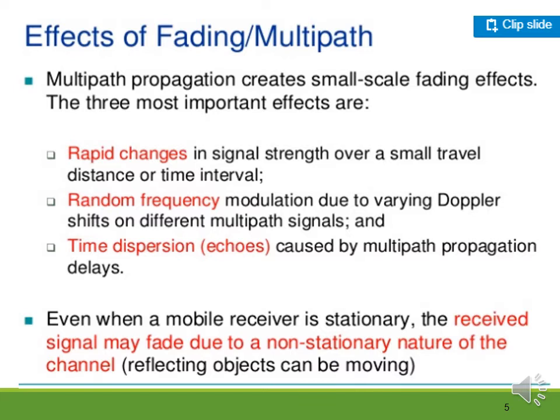Multipath propagation creates small-scale fading effects. The three most important effects are: first, rapid changes in signal strength; second, random frequency modulation due to Doppler shift — the change in frequency or wavelength of a wave relative to an observer moving relative to the wave source; and third, time dispersion caused by multipath propagation delays. Even when a mobile receiver is stationary, the received signal may fade due to the non-stationary nature of the channel.